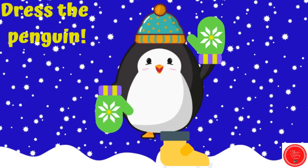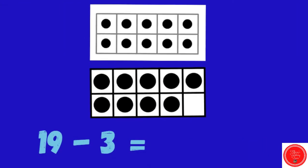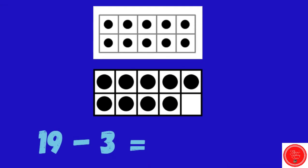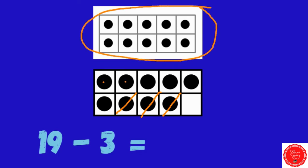There's the penguin's boot. 19 minus 3. We're starting with 19, we need to take away 3. Go ahead and count what we have left. Let's see: 10, 11, 12, 13, 14, 15, 16. 19 minus 3 equals 16.